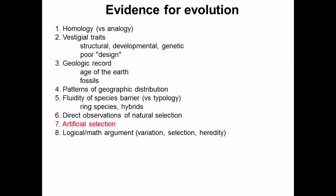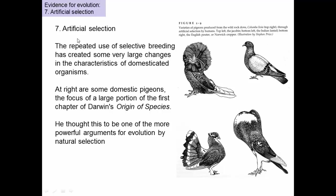Our seventh line of evidence for evolution involves artificial selection as opposed to natural selection. Artificial selection is the term used for human-controlled survival and reproduction, for example, selective breeding.